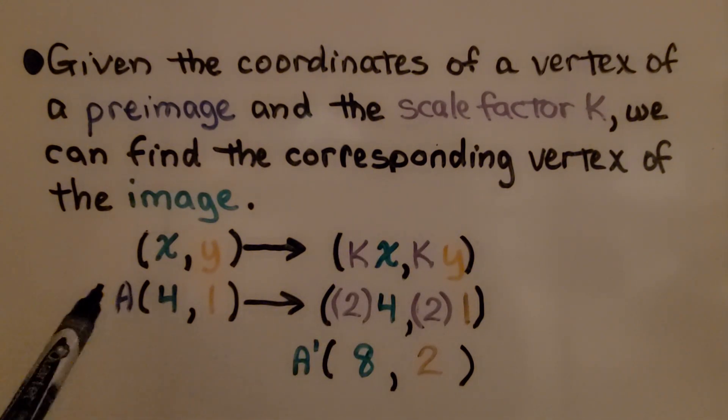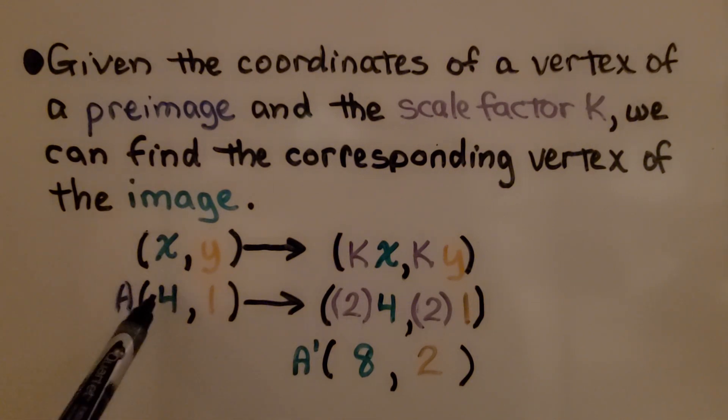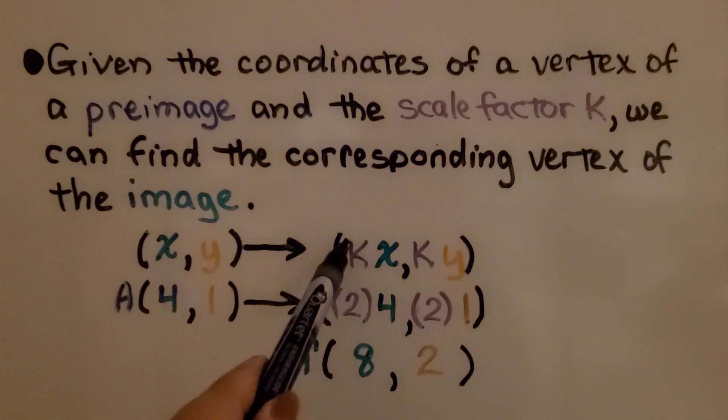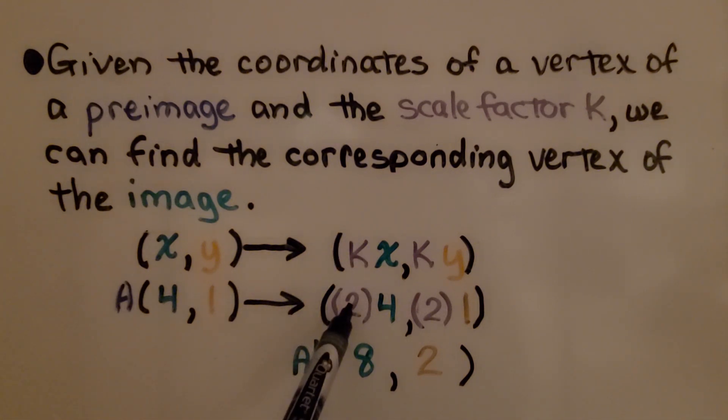So if we know a vertex A is 4 for x, 1 for y, and we know that k, the scale factor is 2, we would do 4 times 2 and 1 times 2. That would give us A prime, which would be 8 for x and 2 for y.